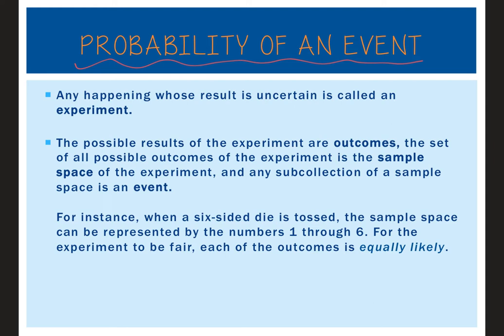Any happening whose result is uncertain is called an experiment. So flipping a coin, rolling a die, picking a rock out of a box, picking a piece of paper out of a hat — all of those are called experiments. The actual act of what you're doing is the experiment.